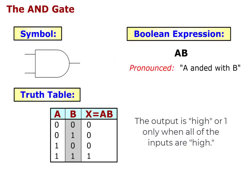This is the symbol, Boolean expression A ANDed with B, and truth table for the AND gate. The truth table shows the output is HIGH, or 1, only when all the inputs are HIGH.